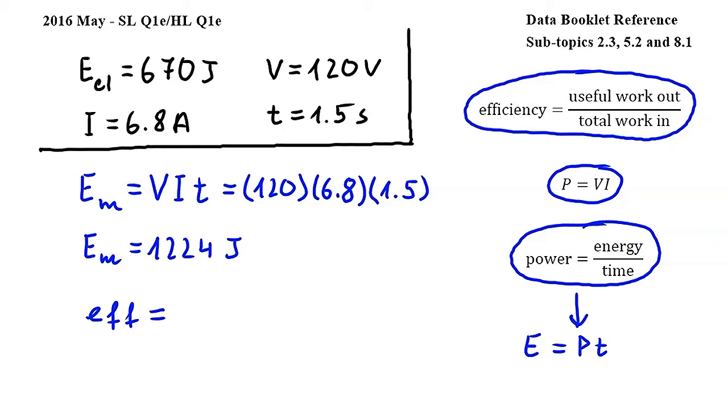In our case, useful energy is the elastic energy stored by the spring, which we found to be 670 joules in a previous question part, divided by the total energy, which is the energy supplied by the motor, and which is 1224 joules.